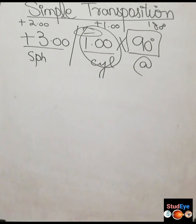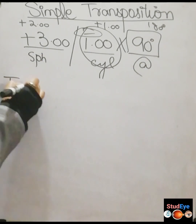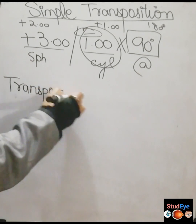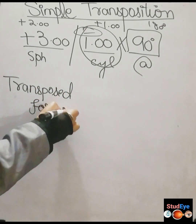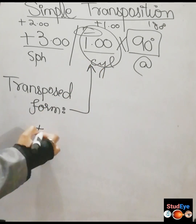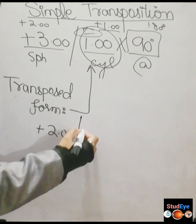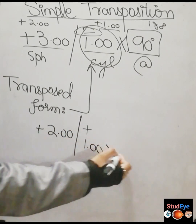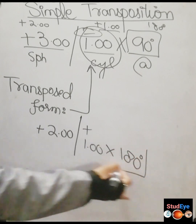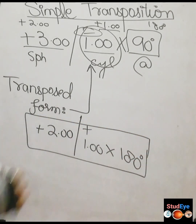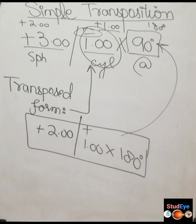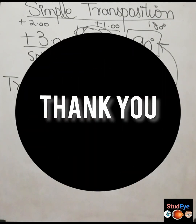We are now done with all three steps. The transposed form of the prescription is plus 2 sphere, plus 1 cylinder, at axis 180 degrees. This is optically equivalent to the original prescription of plus 3 sphere, minus 1 cylinder, at axis 90 degrees — there is no optical difference between them. That concludes today's lecture on simple transposition.